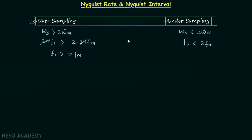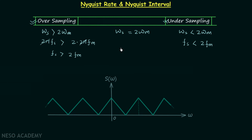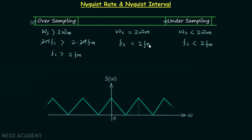We also saw one more case in which ΩS was equal to twice of ΩM. In this case the shifted spectrums of the message signal were just touching. This case is also allowed because there is no overlapping and we can recover the message signal from the sampled signal. From here we get Fs = 2·Fm.